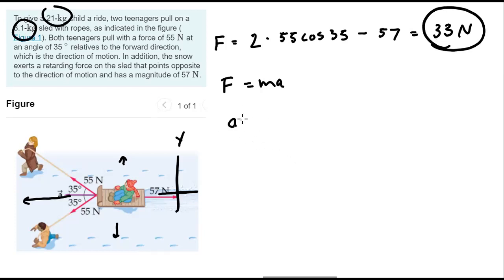Acceleration is the force divided by the total mass. So in our case, it's going to be the force, 33 newtons, divided by the total mass. The mass is the child and the sled together.